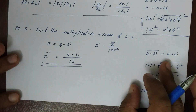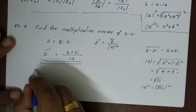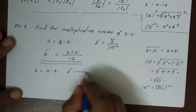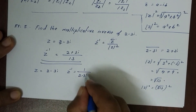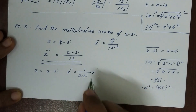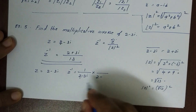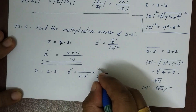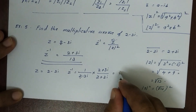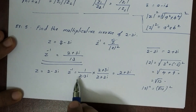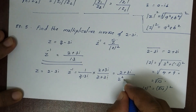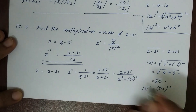Now we will also find the conjugate using the direct method. z is equal to 2-3i, so z inverse is 1 divided by (2-3i). The third step is to multiply numerator and denominator by the conjugate of the denominator. The conjugate of 2-3i is 2+3i, so we multiply to get 2+3i in the numerator. The denominator uses the (a-b)(a+b) formula.